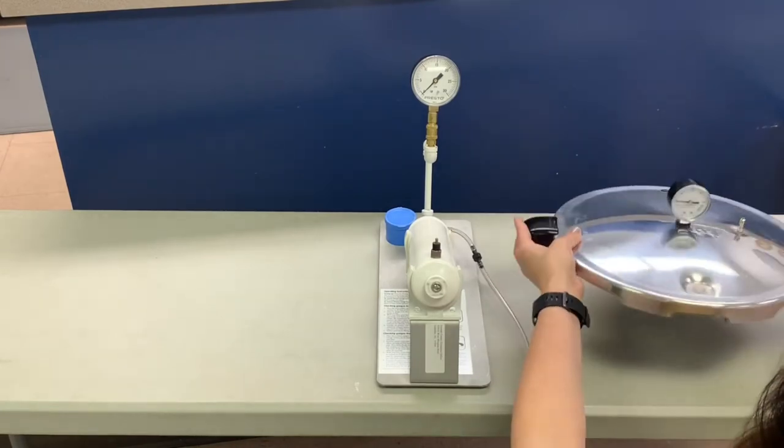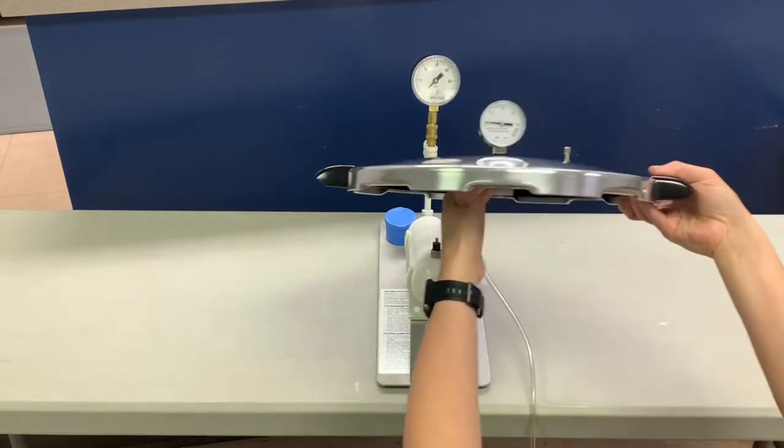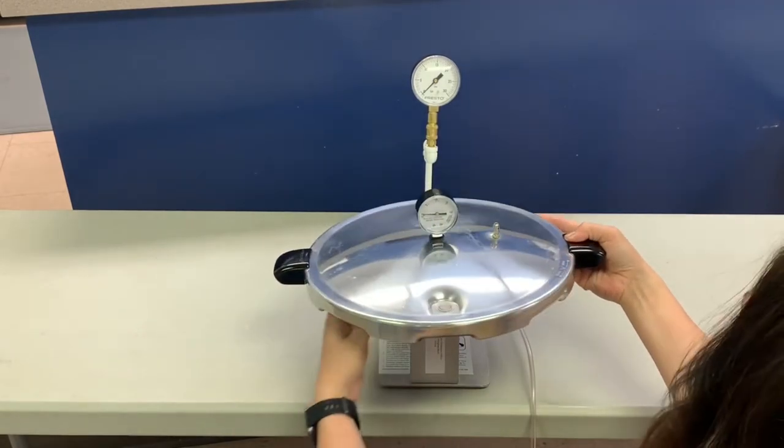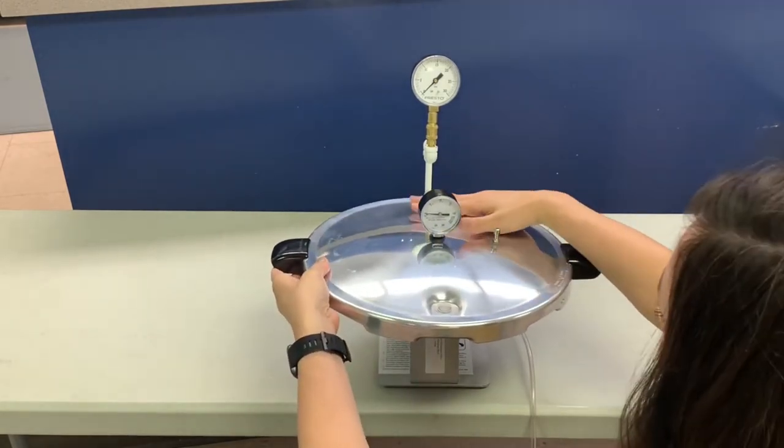Now to test. Place the lid on the Tester where the hole for the gauge is on that little tube in the front. Hold the lid parallel to the Tester as Ashley is doing. Hold it there firmly.